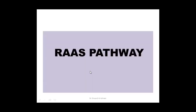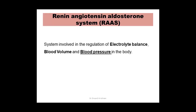First we will discuss the RAS pathway, which you may have already learned in your first year classes, so this is only a recap. The renin-angiotensin-aldosterone system is involved in the regulation of electrolyte balance, blood volume, and blood pressure in the body. We will be mainly concentrating on the regulation of blood pressure.